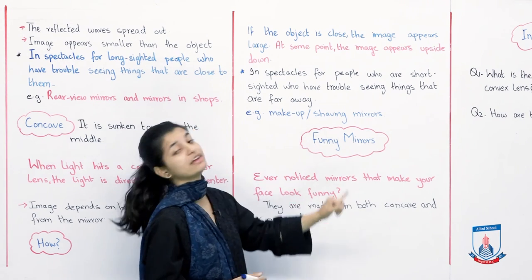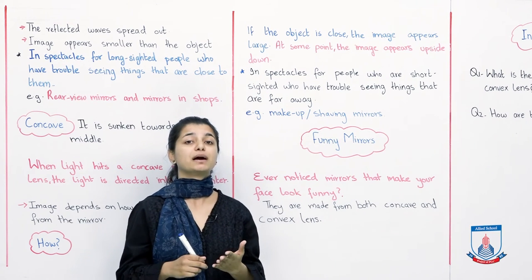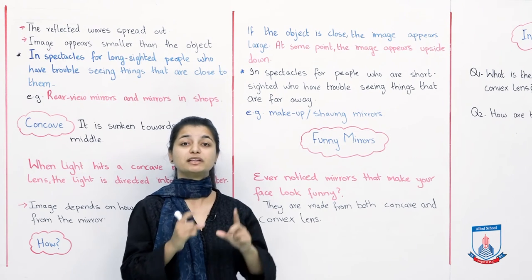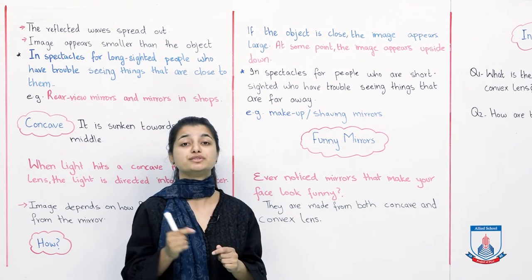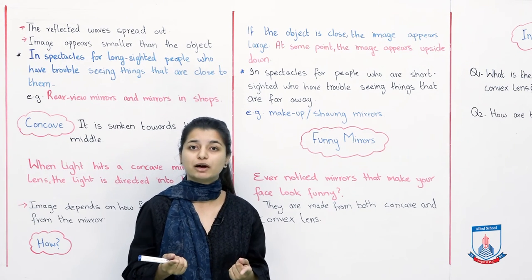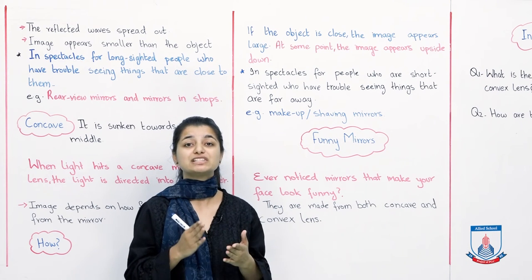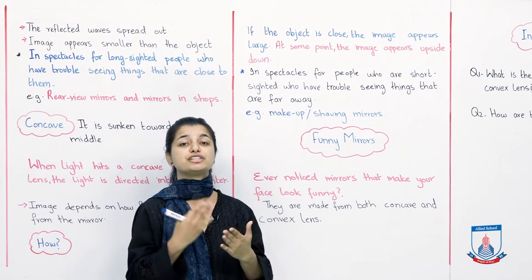Example: Makeup and Shaving Mirrors. This is also a very relevant example. You must have seen your mothers using the makeup kit, in that mirror, or your fathers using the shaving kit, right? So what they use in that mirror is the concave lens mirror, because that's what will help them see clearly and make the object appear bigger.